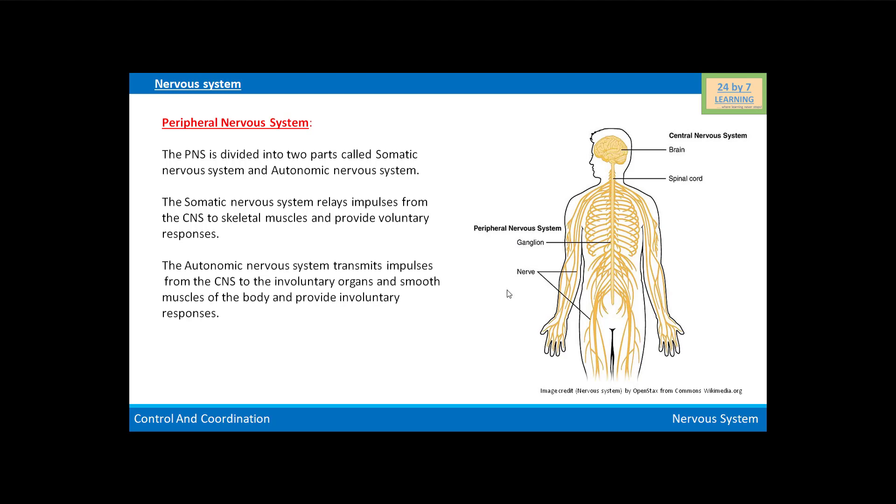The autonomic nervous system transmits impulses from the CNS to the involuntary organs and smooth muscles of the body and provides involuntary responses. The autonomic neural system is further classified into sympathetic neural system and parasympathetic neural system.